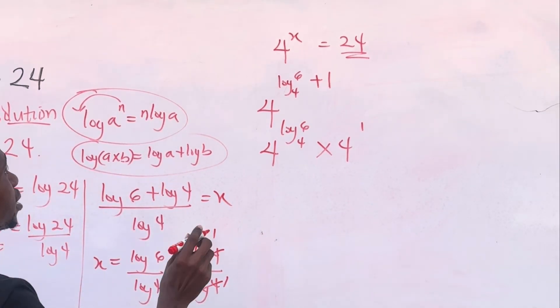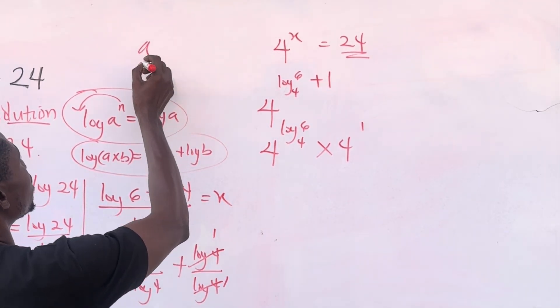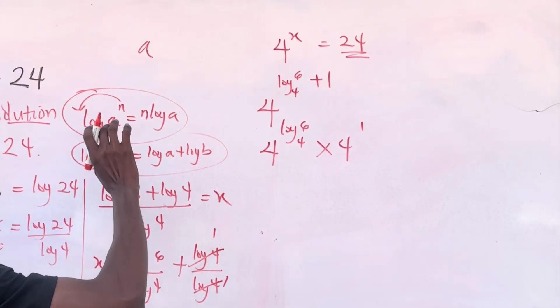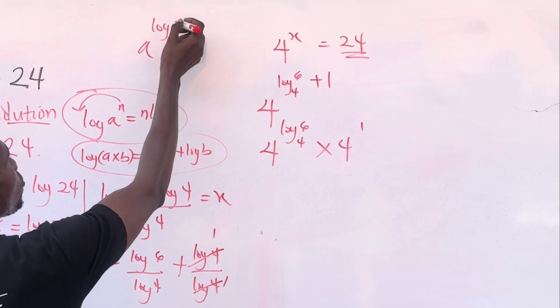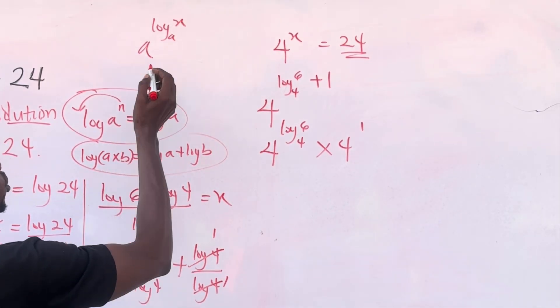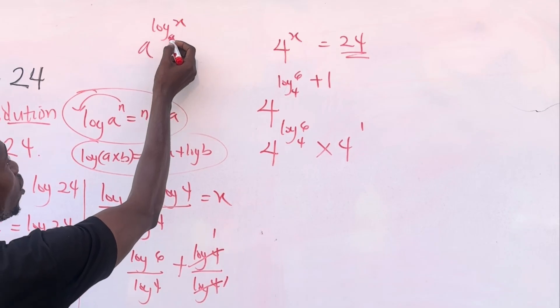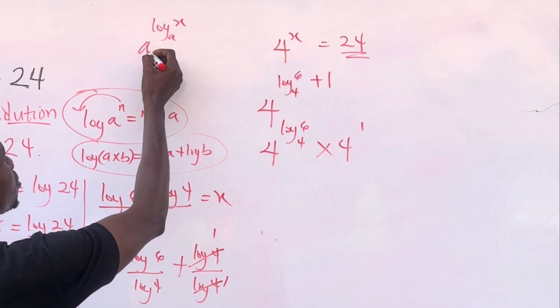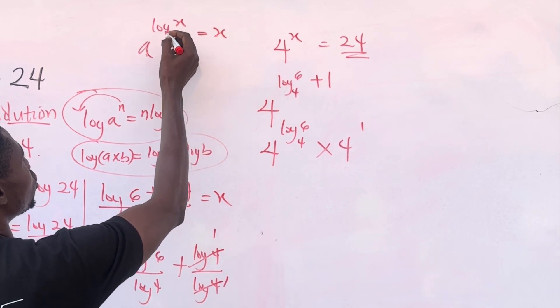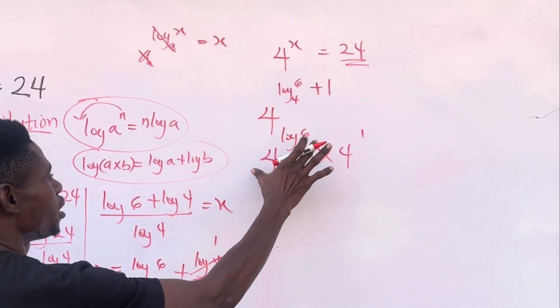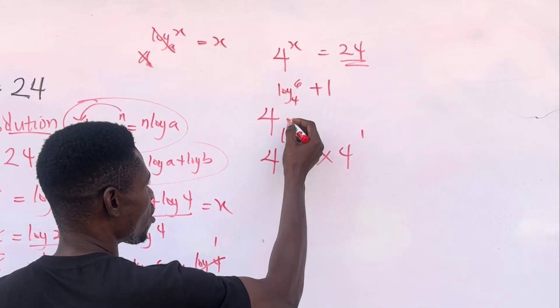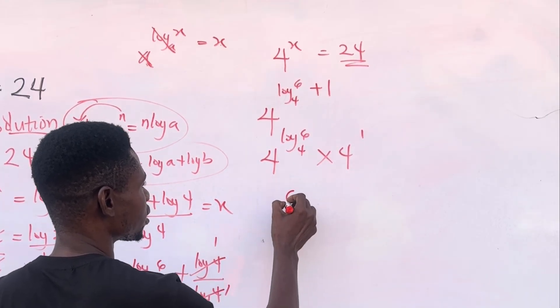Now remember this law of logarithms that says if you have a having a power of log to base a of x. So if the base of the log which is the exponent of this number is the same as the number, your answer is simply x. It's just like this is cancelling the a and then your answer is x. So we can apply this law here. So since 4 and 4 are the same, everything here will give us 6.